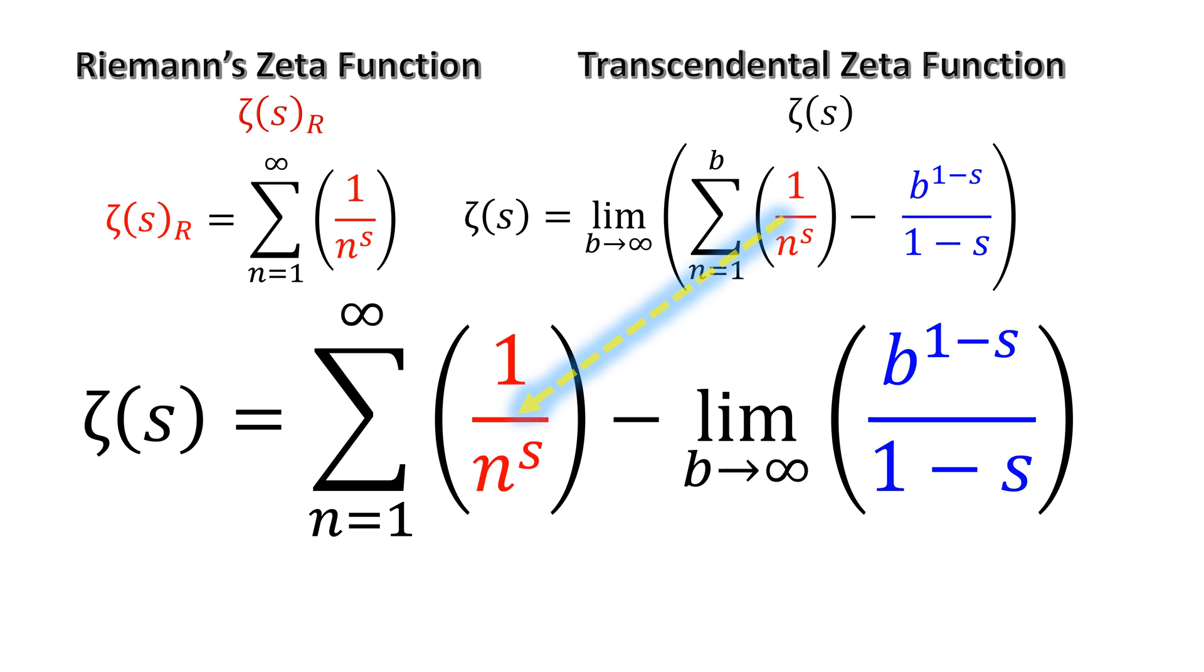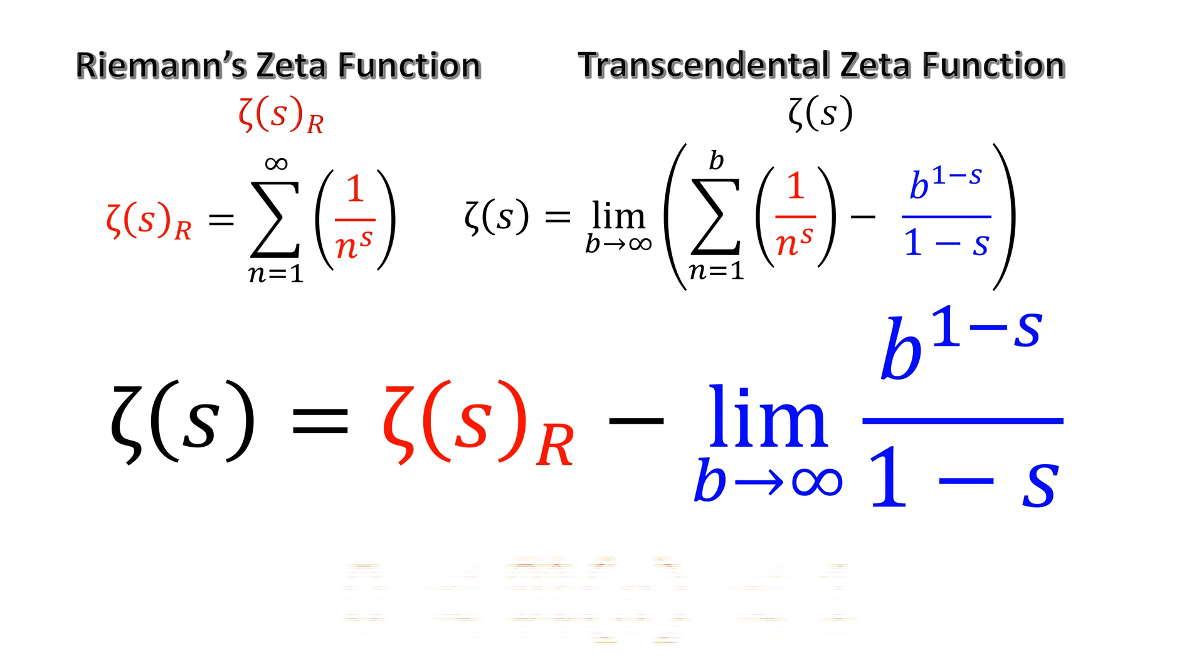Considering that, we can write the transcendental zeta function as the difference of zeta_R minus a simple function with one term in the critical strip.